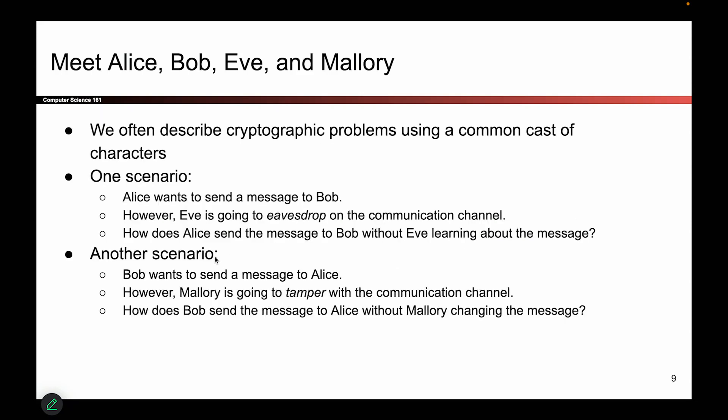Here are some example scenarios to give you an idea of the stories we like to tell with these characters. One story might be: Alice wants to send a message to Bob, but Eve the eavesdropper is going to read the messages they send. The goal is for Alice and Bob to use some sort of protocol — some math — so they can exchange messages without Eve learning what they're saying. Another scenario: Bob and Alice want to exchange messages, but Mallory is going to tamper with the messages while they're being sent. The question is, how do you get the message through while preventing Mallory from changing it, or at least changing it without being detected?